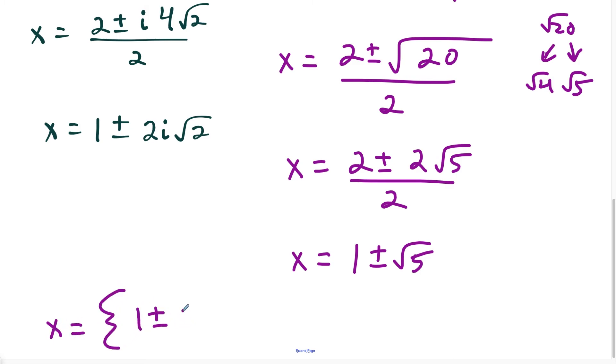So here are all of our solutions to this equation, and we could just write it as one superset here. We have 1 plus or minus 2i square root of 2, but we also have 1 plus or minus the square root of 5.